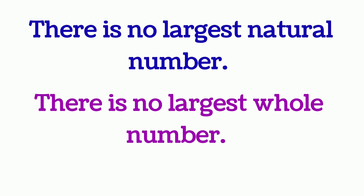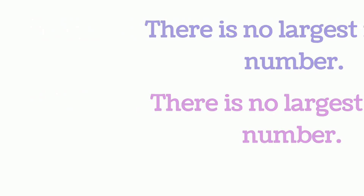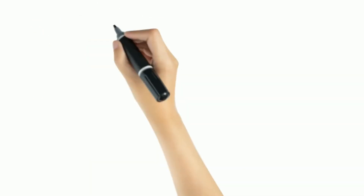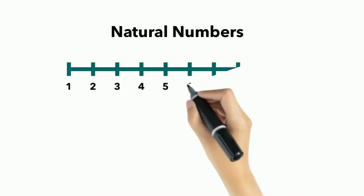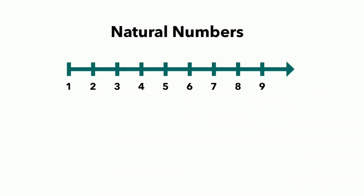Now we can represent these numbers on a number line. I'll show you how the number line for natural numbers would look. It starts from 1, so the first number on this line is 1, and we have the next numbers 2, 3, 4, and so on.